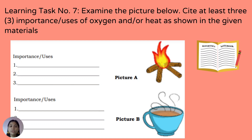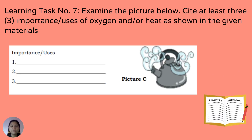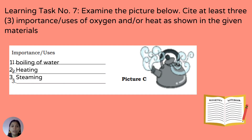Learning Task 7: Examine the pictures below and cite at least three importance or uses of oxygen and/or heat shown in the given materials. Answers: Picture A — cooking, heating, boiling water, and source of heat when cold. Picture B — food, hot soup, and chemical energy. For boiling of water — heating and steaming.